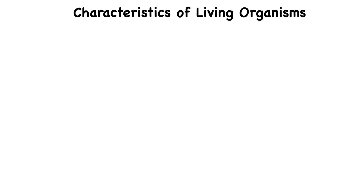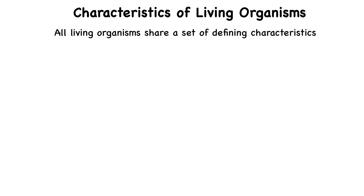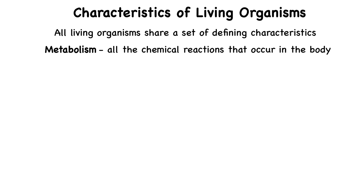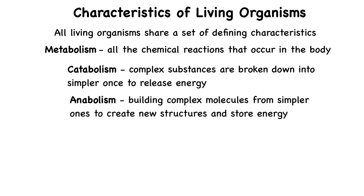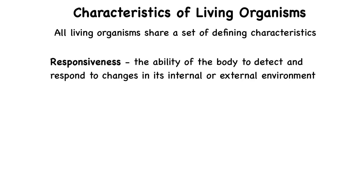So what exactly makes the human body, or any living thing, alive? All living organisms share a set of defining characteristics. The first is metabolism — all of the chemical reactions that occur in the body. This includes catabolism, where complex substances are broken down into simpler ones to release energy, and anabolism, where the body builds complex molecules from simpler ones to create new structures and store energy. Together, these processes keep your body functioning and growing. Then there's responsiveness — the ability of the body to detect and respond to changes in its internal or external environment. For example, pulling your hand away from a hot surface is a rapid response that protects your body from harm.